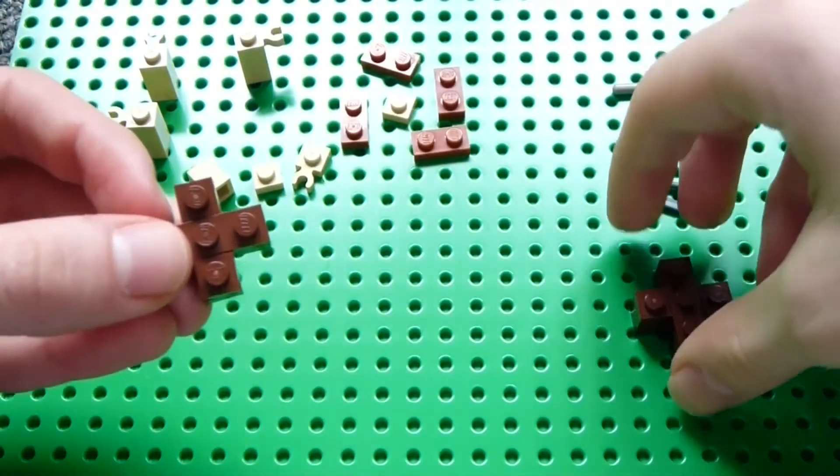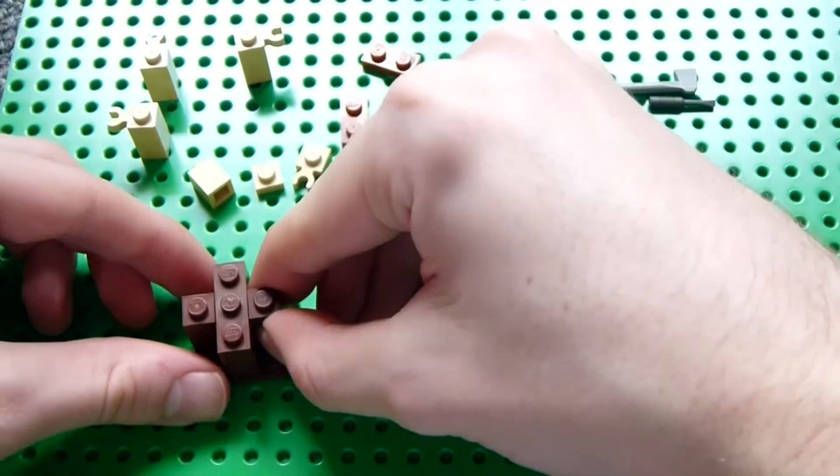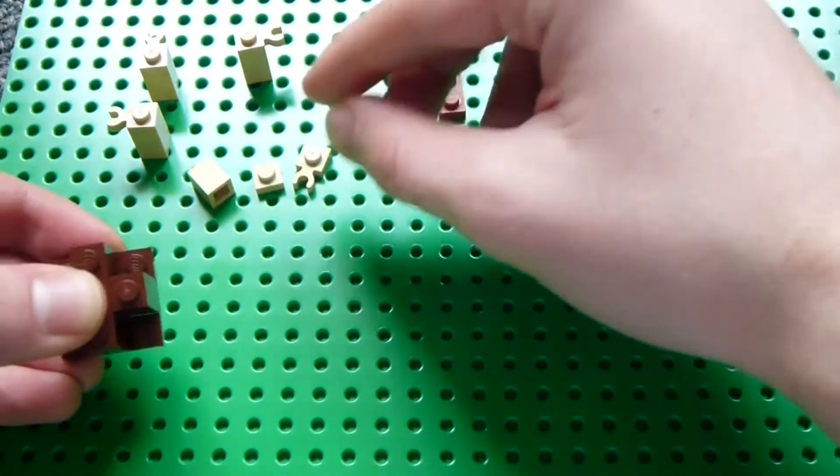And we'll want to make that five layers tall. And then we'll stick that onto our base. Now for the corners, we'll make this four times.